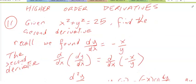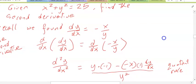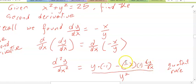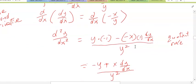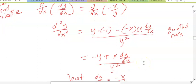So our second derivative we write as d squared y over dx squared. If we take the derivative of negative x over y, we're using the quotient rule — take low d high minus high d low over low squared. Using that quotient rule, we end up with y times negative 1 minus negative x times 1 dy/dx, all over y squared. That's negative y plus x dy/dx over y squared.